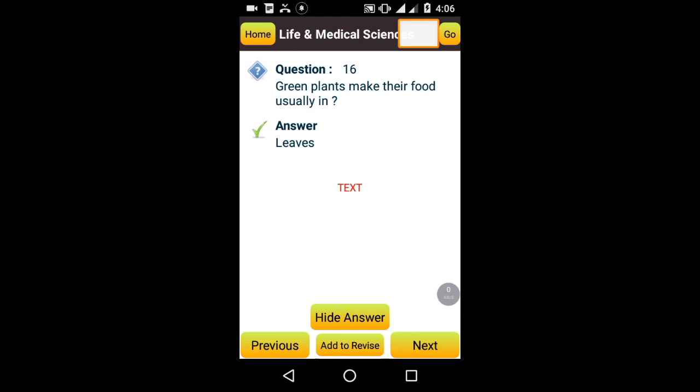An edible red algae is Porphyra. Green plants make their food usually in leaves. Mushroom is a fungus. Plant growth is more in darkness. The algae which is used for producing oxygen in spacecrafts is Chlorella. The largest group of plant is Tracheophyta. Which instrument is used to record the growth of plants? Crescograph.